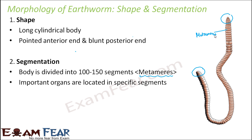These segments can contract or relax independently to cause the body to lengthen in one area or contract in others. Segmentation basically provides flexibility and also strength in movement — it is because of the presence of these segments that the earthworm is able to move. Now let us look at the dorsal and ventral view of the earthworm.